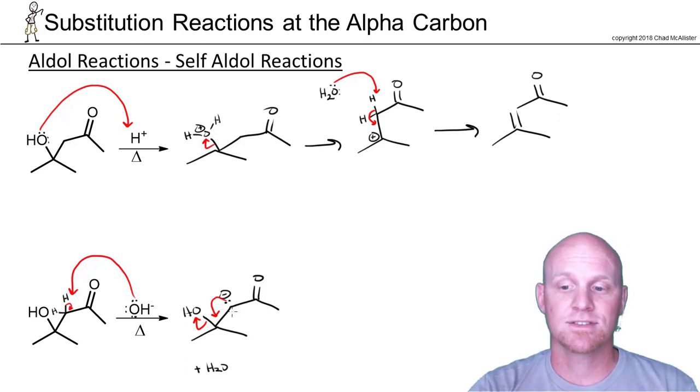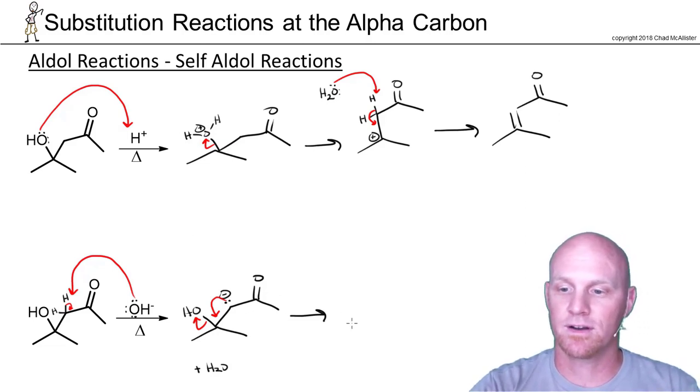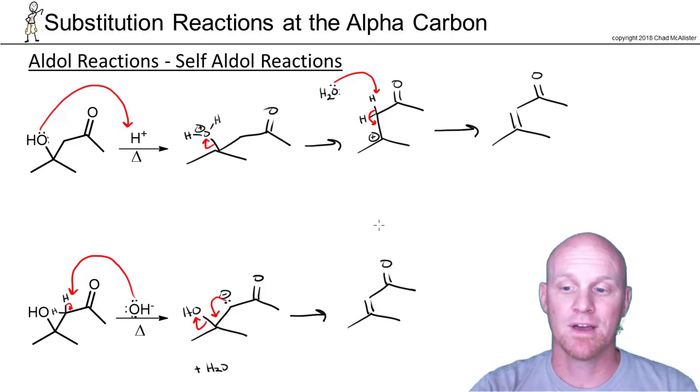In this case, we're actually going to drop these electrons in to form the pi bond and kick off the OH. It turns out it does happen in two steps, like we're drawing it here. This is one of those weird things where the OH is actually going to function as a leaving group. It's not a great leaving group at all, but it's going to happen.